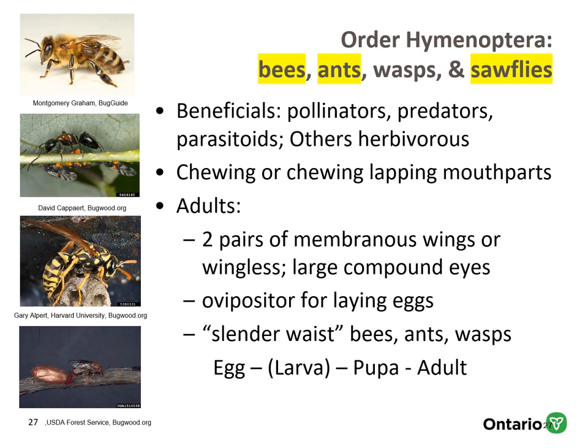The hymenoptera include bees, ants, wasps, and sawflies. This group contains many beneficials — pollinators, predators, parasitoids — and others that are plant feeders. They have chewing or chewing-lapping mouthparts, with immatures having chewing mouthparts. Adults have two pairs of membranous wings, or can be wingless, and have large compound eyes. They also have an ovipositor that can be quite sharp for laying eggs or sawing into tissues. Several of them, like bees, ants, and wasps, have a slender waist. This group undergoes complete metamorphosis: egg, larva, pupa, and adult.